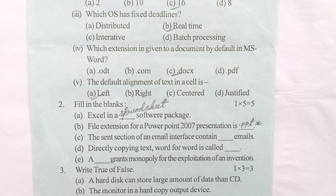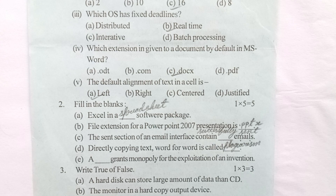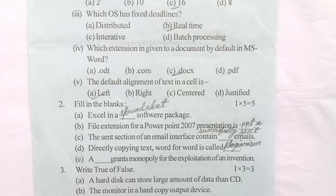Fill in the blanks continued: (c) The sent section of an email interface contains successfully sent emails. (d) Directly copying text word for word is called plagiarism. (e) A patent grants monopoly for the exploitation of an invention.